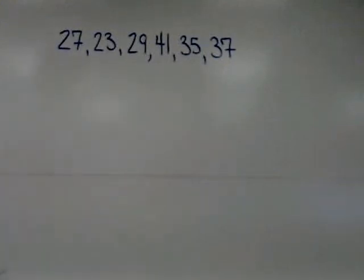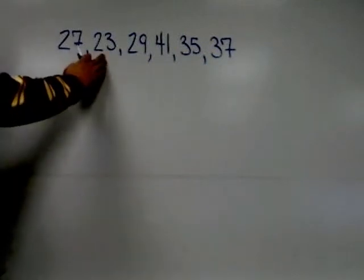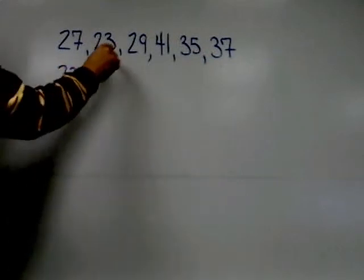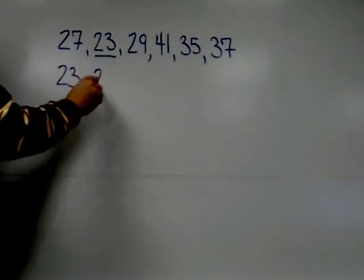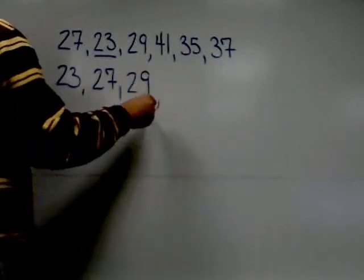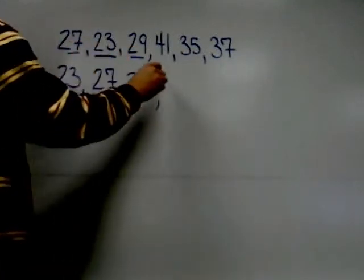In this problem we're finding the median of the data set. To find the median, according to the first step, you need to put the numbers in order from least to greatest. So the smallest number in the list is 23, so we begin with it. The next smallest number is 27.